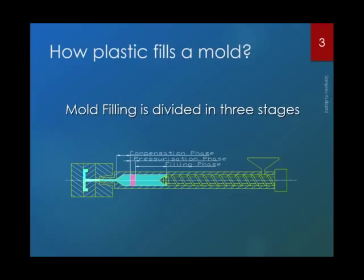Typically, mold filling is divided into three stages. In the first stage, what you see on the screen is a schematic diagram of an injection mold in a closed condition with the injection screw barrel. Initially, the required amount of polymer melt is collected in front of the screw tip barrel. As soon as you start moving the plunger or screw, the polymer melt starts filling the cavity through the nozzle and screw bush. The movement of the screw during this period is primarily occurring during the filling stage.